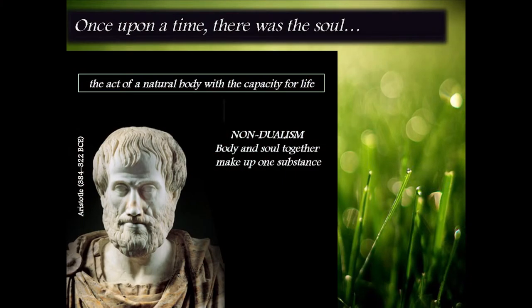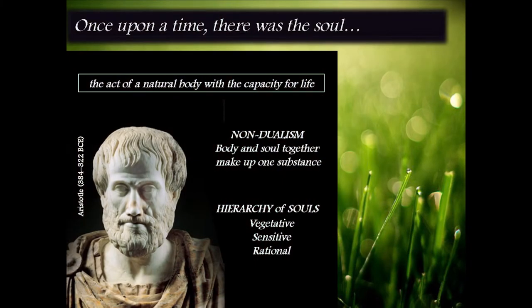The other thing that he was interested in — and this is the emergence of the scientific mind in the sense of boxing and organizing knowledge, which is something that we have become very good at — is that he decided to create a few boxes to distinguish between different souls. The first one he called the vegetative.